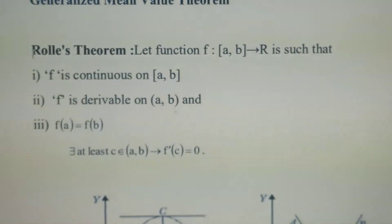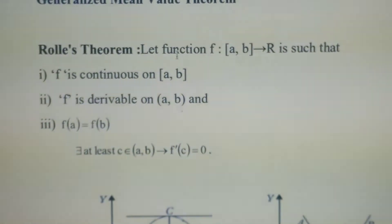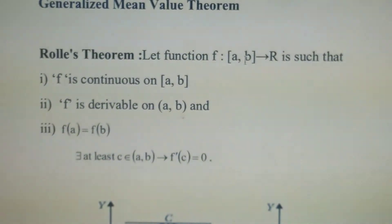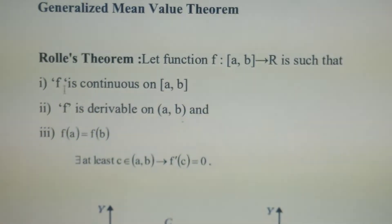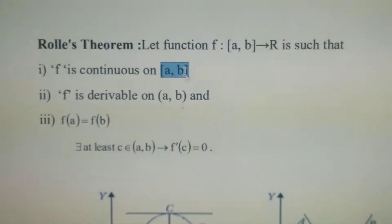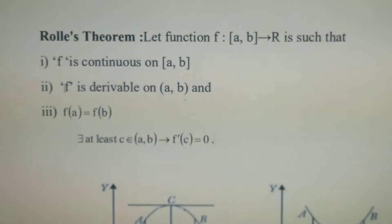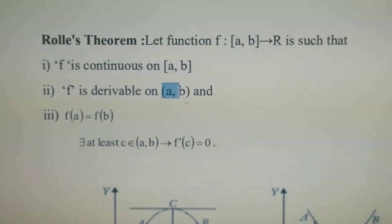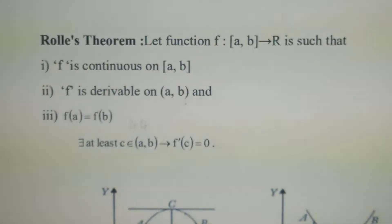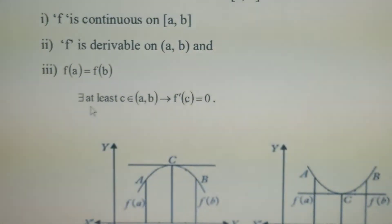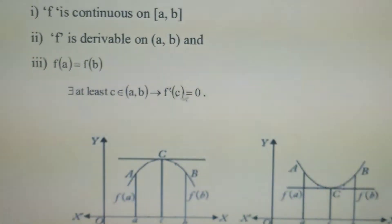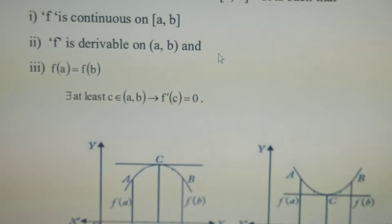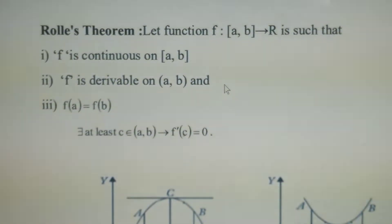What is Rolle's Mean Value Theorem? Suppose f is any function which is mapping from closed interval [a,b] to ℝ such that f is continuous on closed interval [a,b], f is differentiable on open interval (a,b), and f(a) = f(b). Then there exists c belonging to (a,b) such that f'(c) = 0. This is the statement of Rolle's Mean Value Theorem.